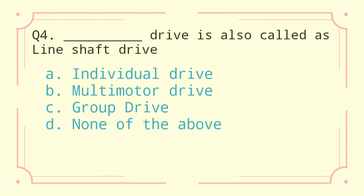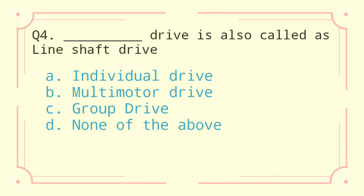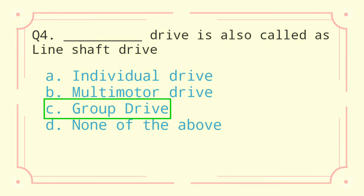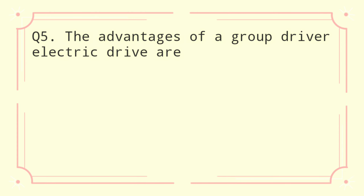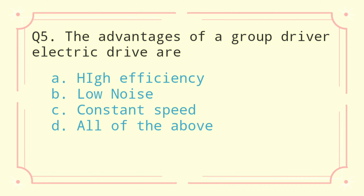Question 4: This drive is also called as line shaft drive. a) individual drive, b) multi-motor drive, c) group drive, d) none of the above. The correct answer is group drive.